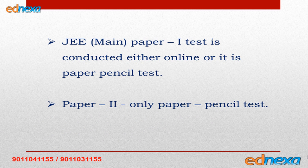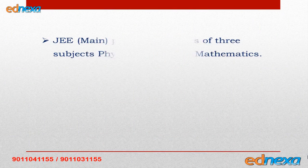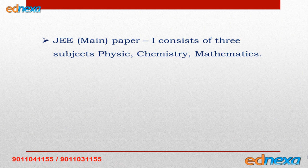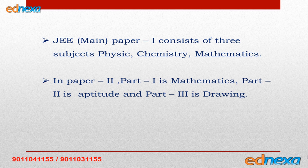JEE Main paper two will be given by students who want to do architecture. Paper two will be conducted only with pencil and paper. In JEE Main paper one, three subjects will be there: physics, chemistry, and mathematics. The same weightage and the same number of MCQs will be given to all three subjects.